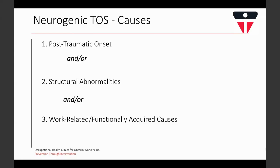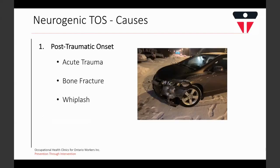Post-traumatic onset refers to an acute trauma such as a fracture to the clavicle or first rib, or a car accident or fall causing a whiplash-type injury involving rapid hyperextension and hyperflexion of the neck. This type of injury can damage the muscles and tissues bordering the thoracic outlet and cause compression as a result of the injury and healing process.